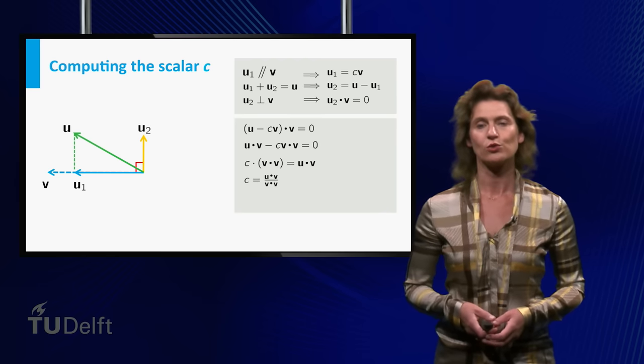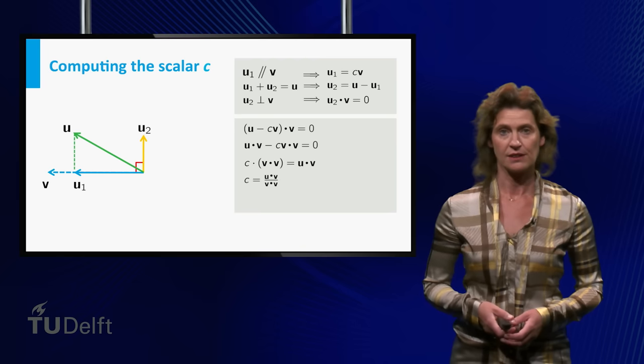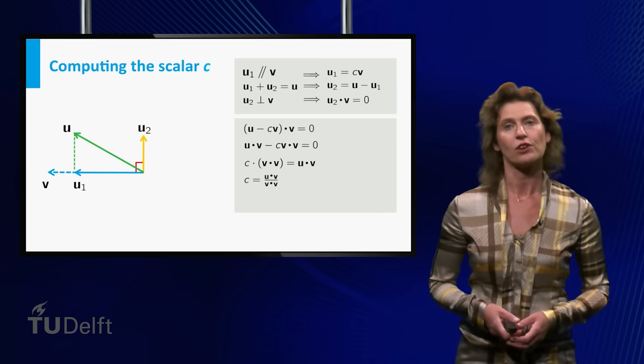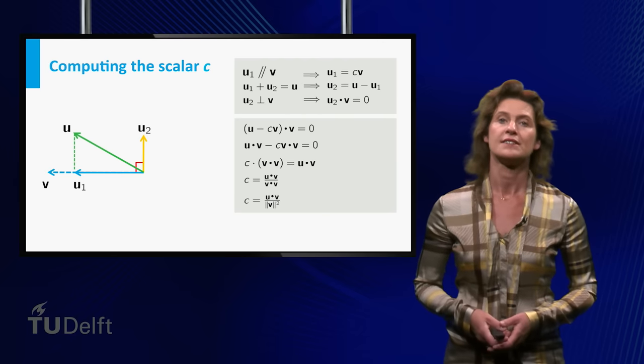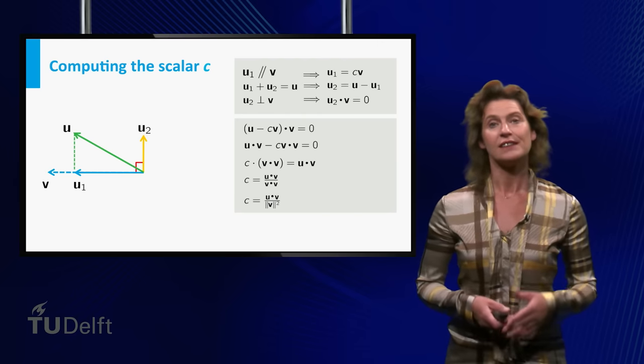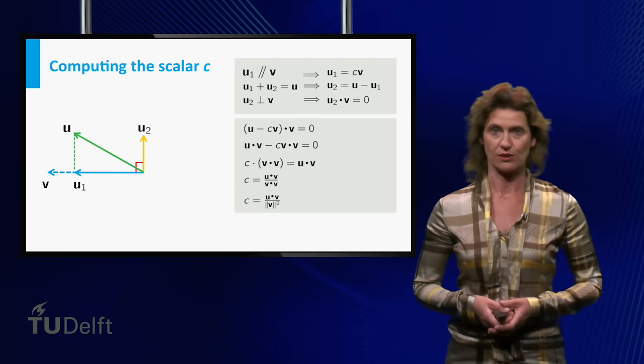Consequently, c is equal to the dot product of u and v divided by the dot product of v and itself, or equivalently c equals the dot product of u and v divided by the square of the length of v.